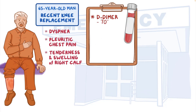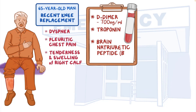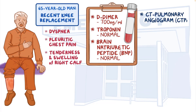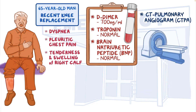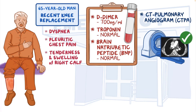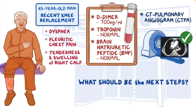D-dimer levels are 700 nanograms per milliliter, while troponin and brain natriuretic peptide (BNP) levels are obtained for evaluation of right heart strain and are normal. A CT pulmonary angiogram study is ordered confirming the diagnosis of pulmonary embolism. What should be the next steps in managing this patient?